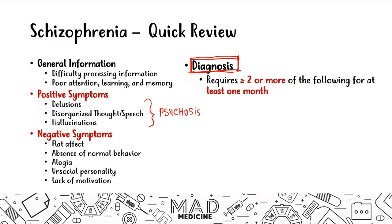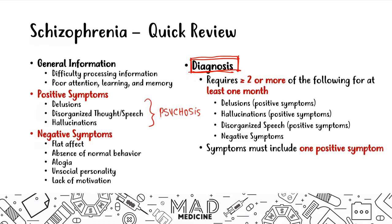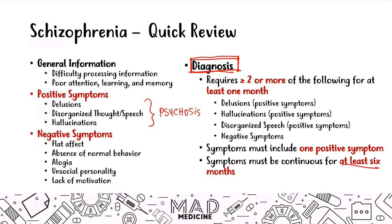Patients have to have symptoms for at least one month in general. These include delusions, hallucinations, and disorganized speech as positive symptoms, as well as some negative symptoms. The symptoms must include at least one positive symptom and they must be continuous for at least six months. That six-month portion is very important — symptoms must occur for at least six months.